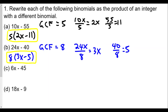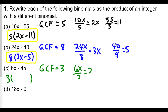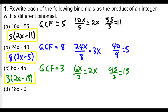For part (c), the GCF of 6x and 45 is 3. Dividing: 6x ÷ 3 = 2x (first term), and 45 ÷ 3 = 15 (second term). So the answer for (c) is 3(2x − 15).